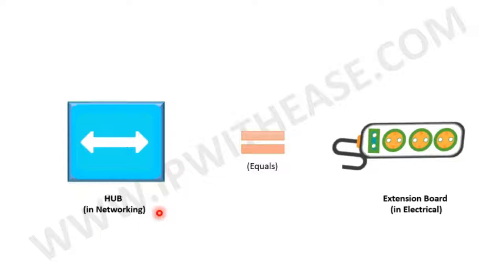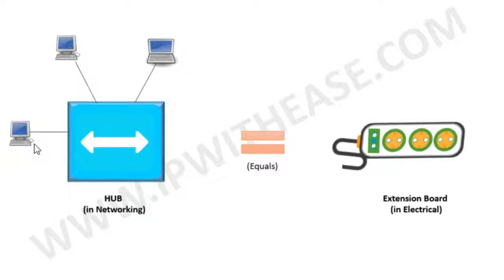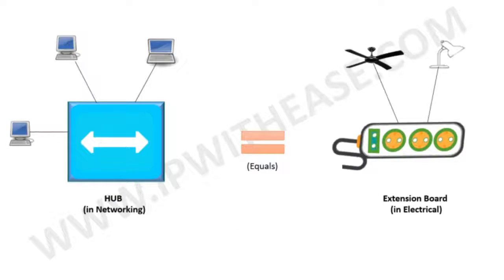A hub in networking terms is the same as an extension board in electrical terms. Multiple networking devices like PC, laptop, and printer can be connected to a hub. In the same manner, multiple electrical devices like fan and lamp can be connected to an extension board.